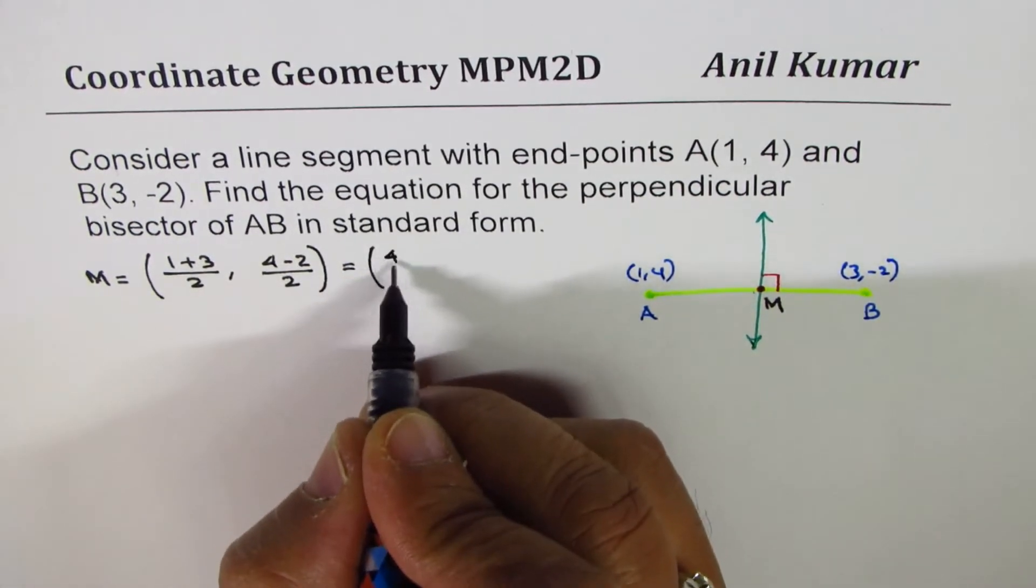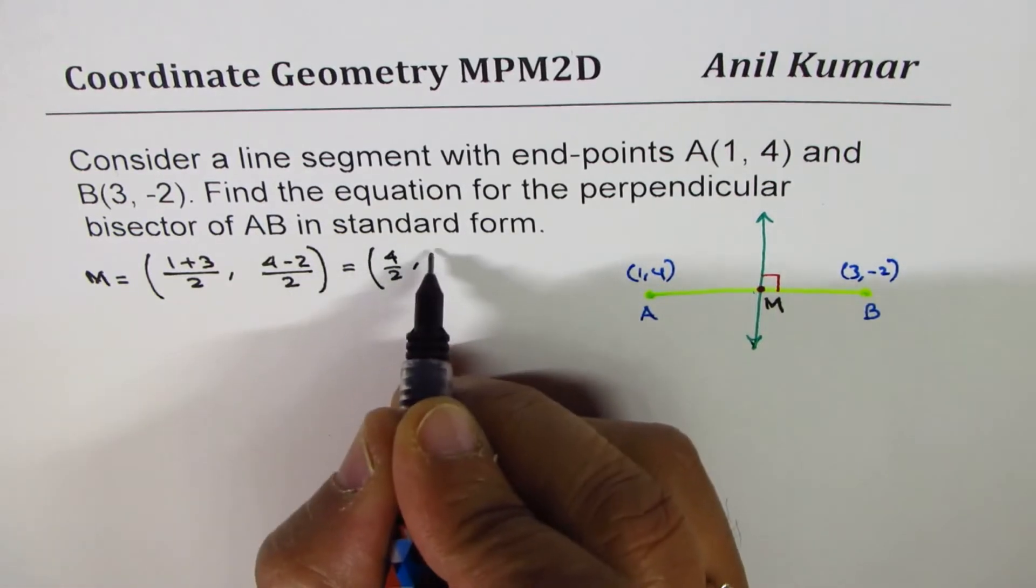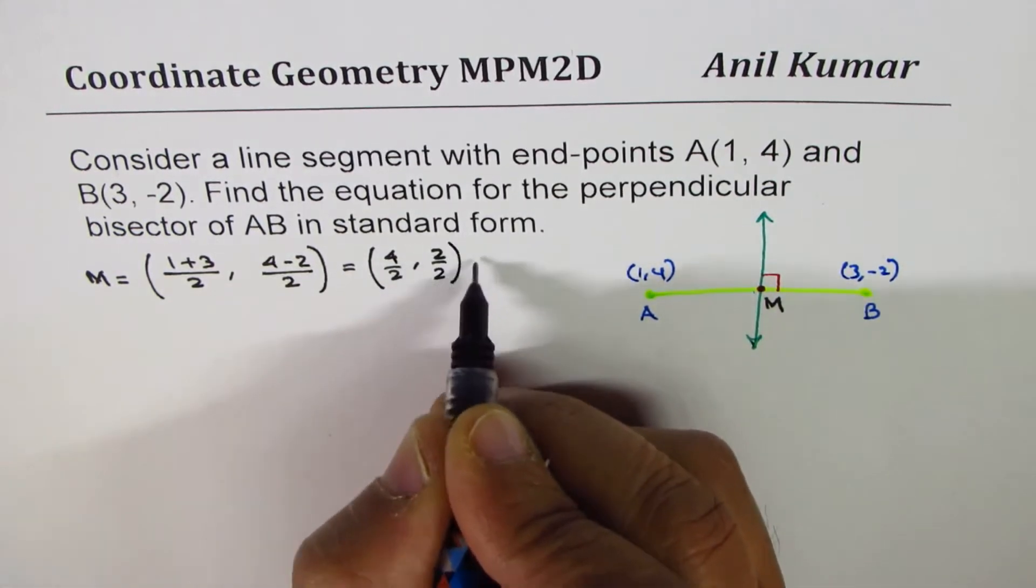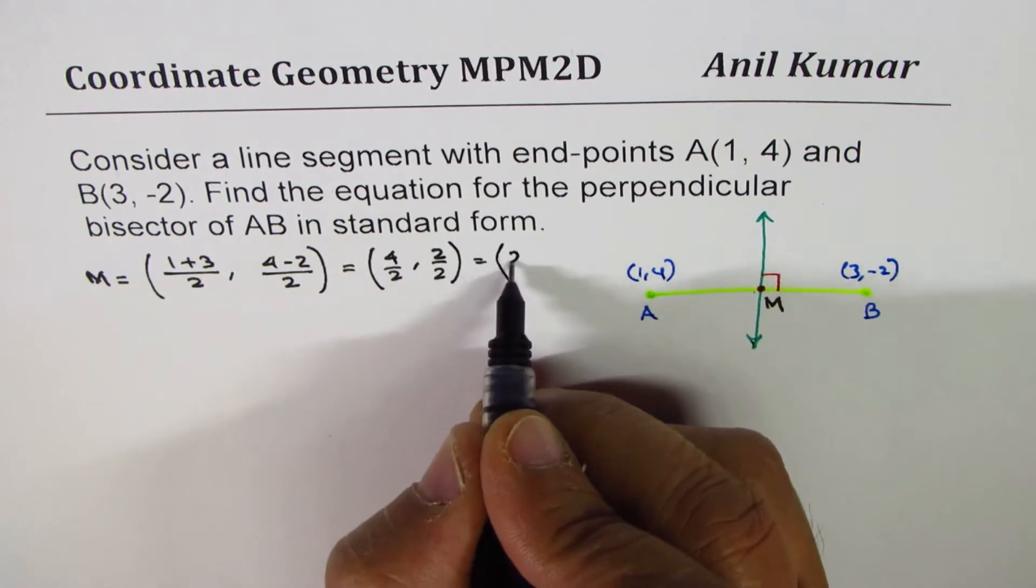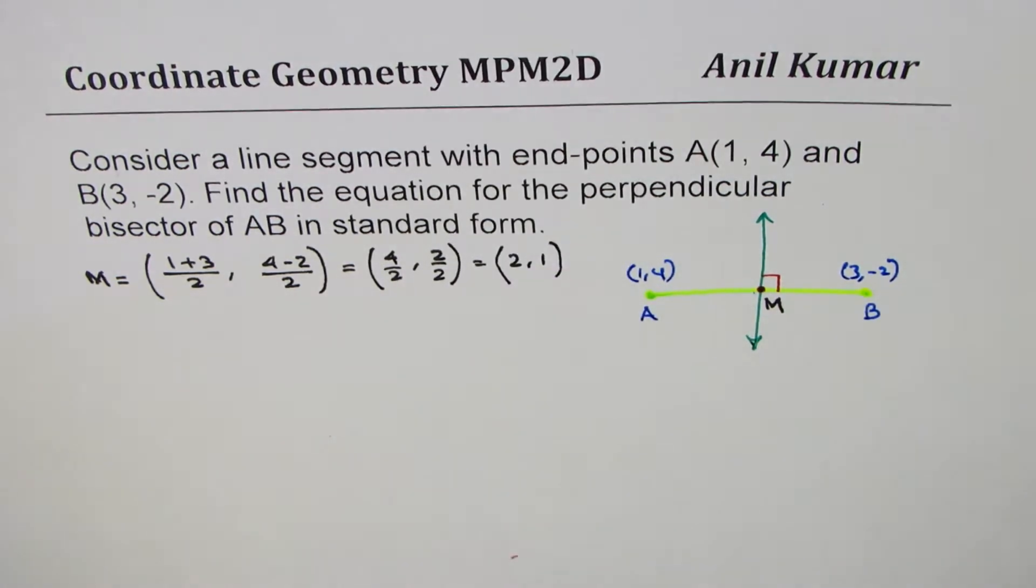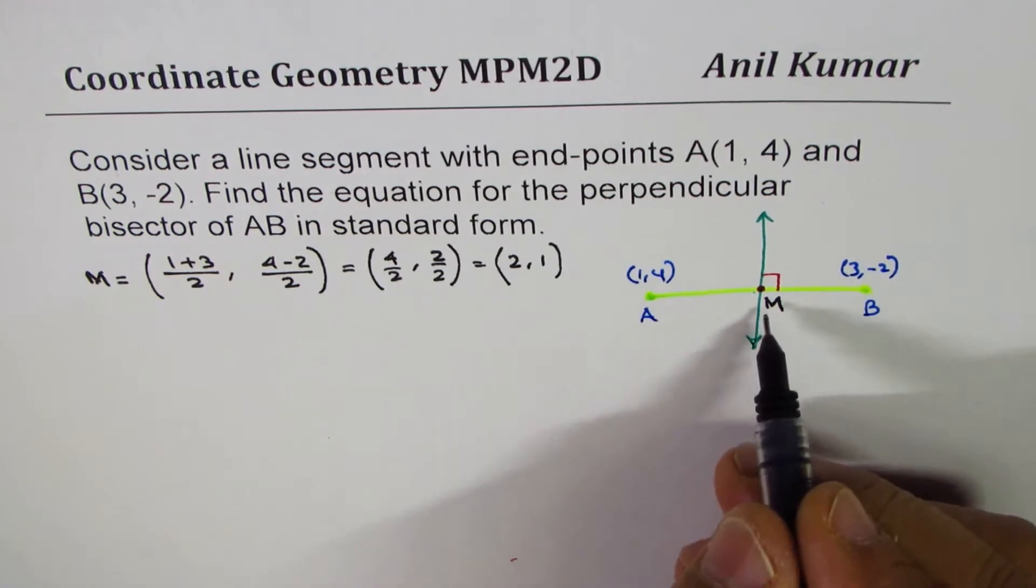let me write in steps and that is 4/2. You don't need to rush here. So, 2 comma 1, no calculation mistakes. Now, in coordinate geometry, calculations are very important. So, calculator should always be handy. We found M.